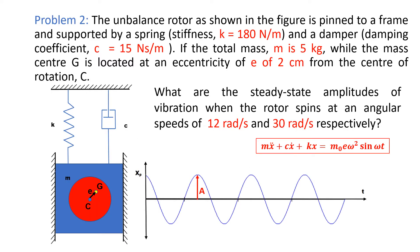In problem set number two, the unbalanced rotor as shown in figure is pinned to a frame and supported by a spring and a damper. This is M mass — it is a rotating unbalanced mass whose center of gravity is G at eccentricity E from center of rotation C. Because of this eccentricity, the system is unbalanced and is subjected to centrifugal forces, and the vertical component of centrifugal forces makes this system vibrate in the vertical direction because its motion is guided by these vertical guides.